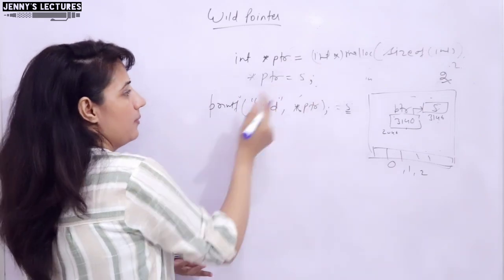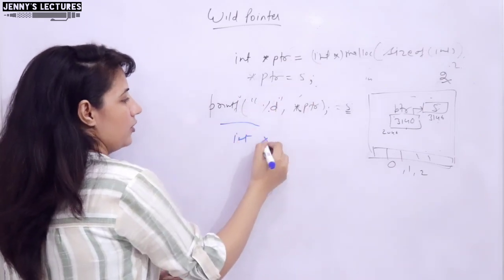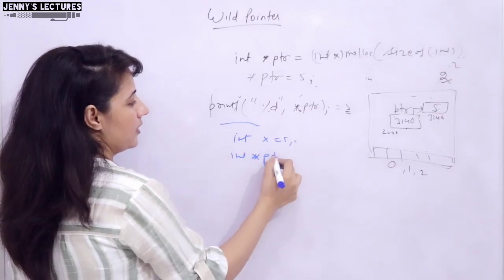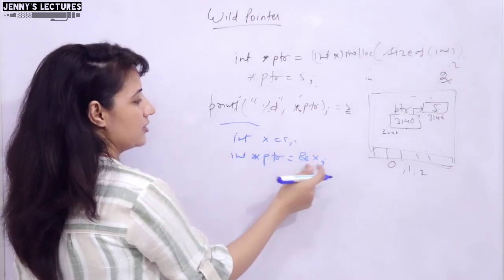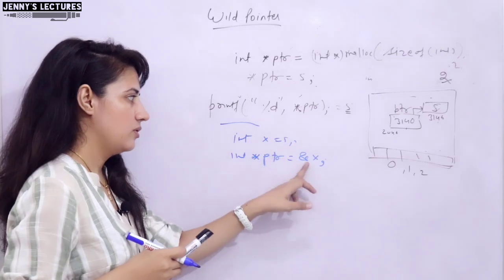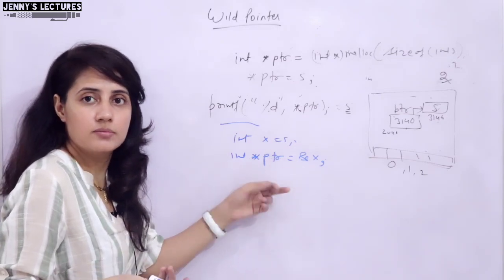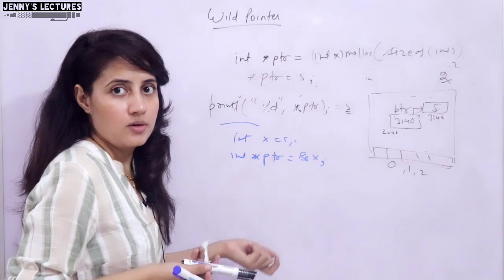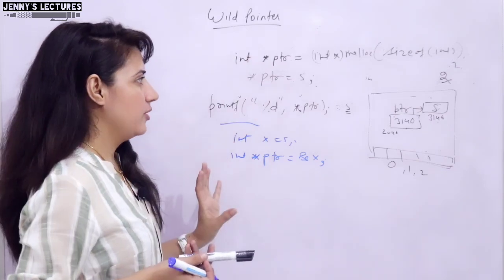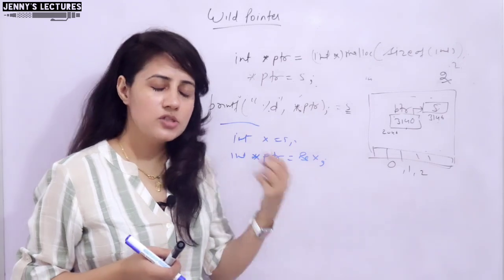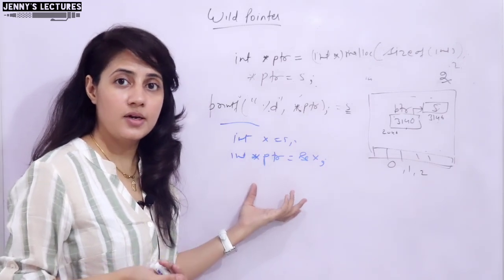And third is, simply if you do not dynamically allocate memory, if you take a variable like int x is equal to 5, and when you declare a pointer int star PTR, directly you can initialize it using address of operator like address of x. So now here also it is not a wild pointer. There are 3 ways to get rid of this wild pointer.